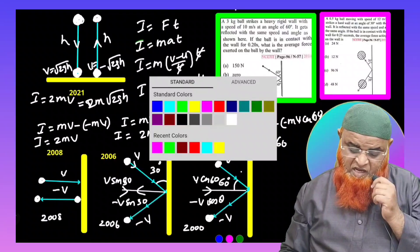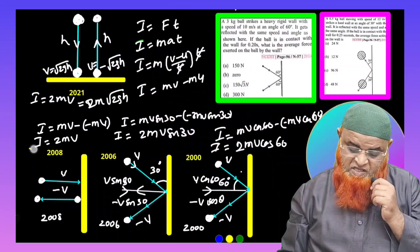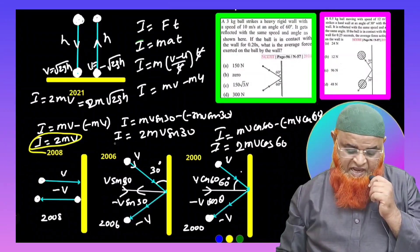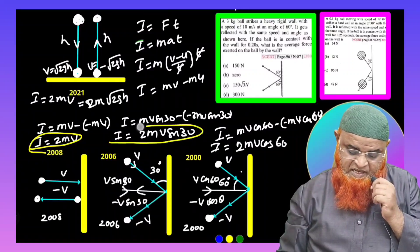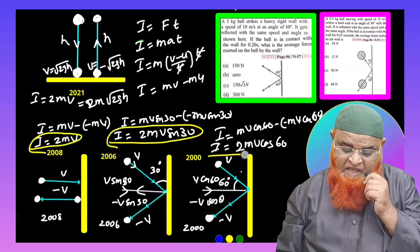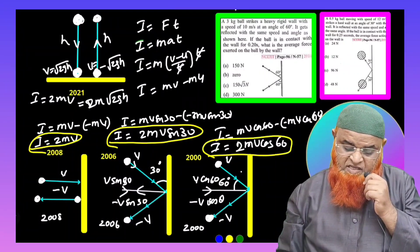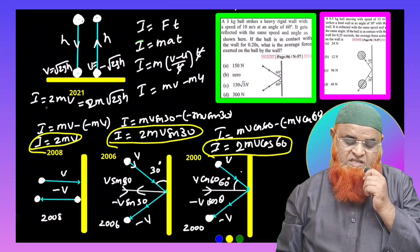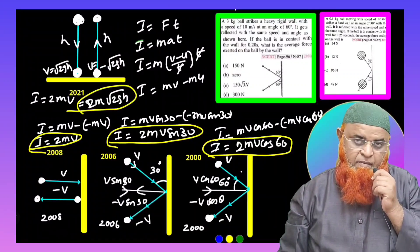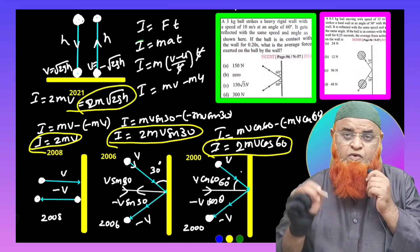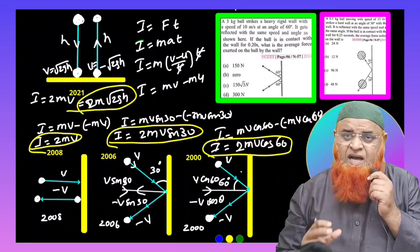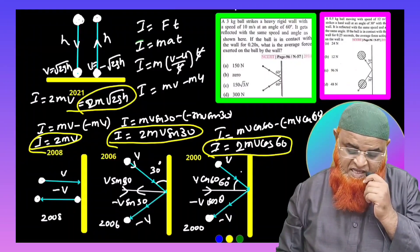To summarise, all four NEET impulse formulas: 2008 — impulse = 2MV; 2006 — impulse = 2MV sin 30; 2000 — impulse = 2MV cos 60; 2021 — impulse = 2M root(2GH). Hope you have understood this continuously asked concept. Thank you very much, have a nice day.